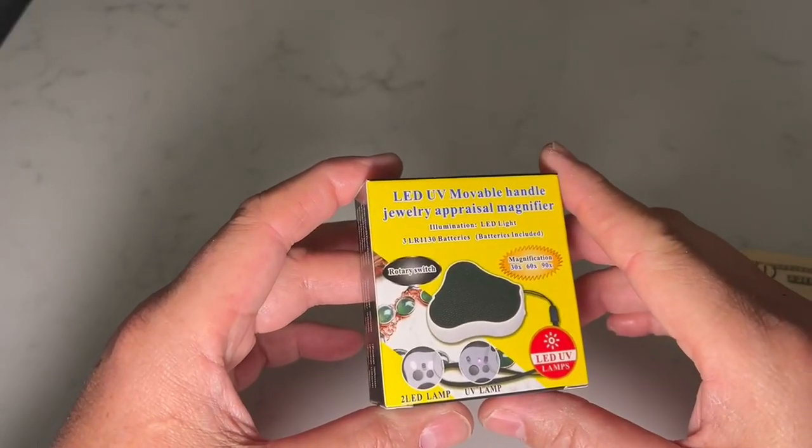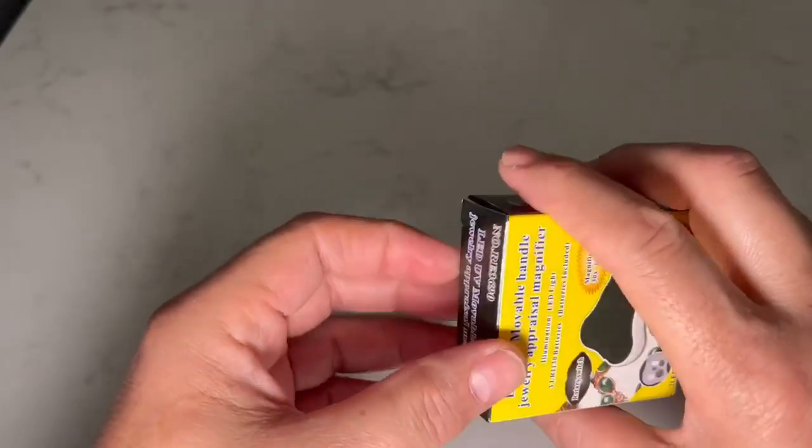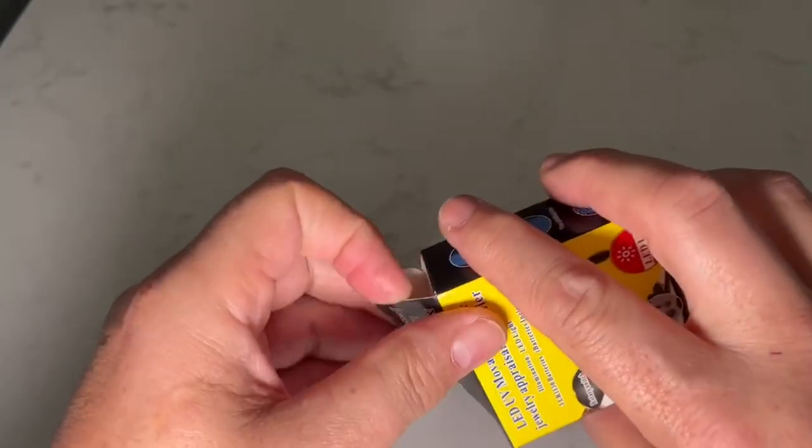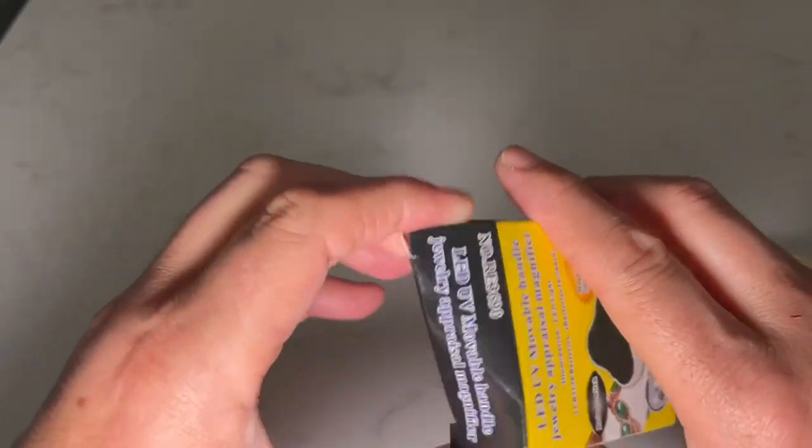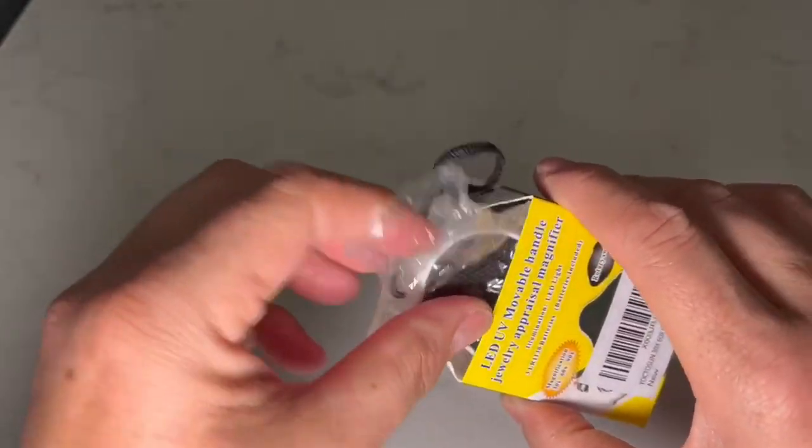Hi everyone, this is a video review of the Yoctosun Illuminated Magnifier. So this is an illuminated loop. It has three different powers, 30 power, 60 power, and 90 power illumination.